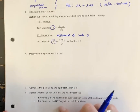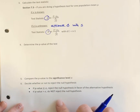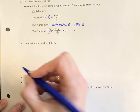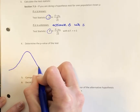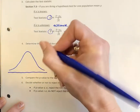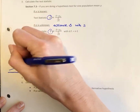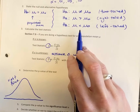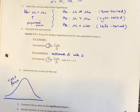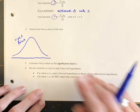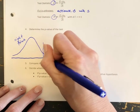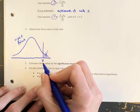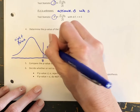After we've calculated our test statistic, we determine the p-value. The way we calculate the p-value depends on what our alternative is. If we have a right-tailed test — where our alternative is that mu is greater than mu-sub-zero — then the p-value is found by taking the area to the right of our test statistic, whether that's z or t depending on which test we're doing.